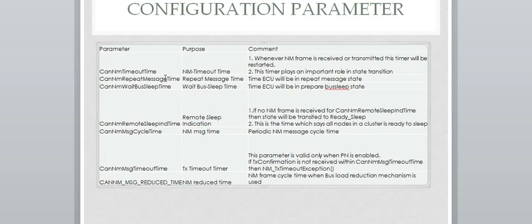Next is CAN-NM Repeat Message Time — this is a configurable parameter and represents the time during which the ECU will be in the Repeat Message State. Then we have CAN-NM Wait for Bus Sleep, which is the time the ECU will be in the Prepare Bus Sleep State. We also have CAN-NM Remote Sleep Indication Time: if no NM frame is received for this duration, the state will transition to Ready Sleep.